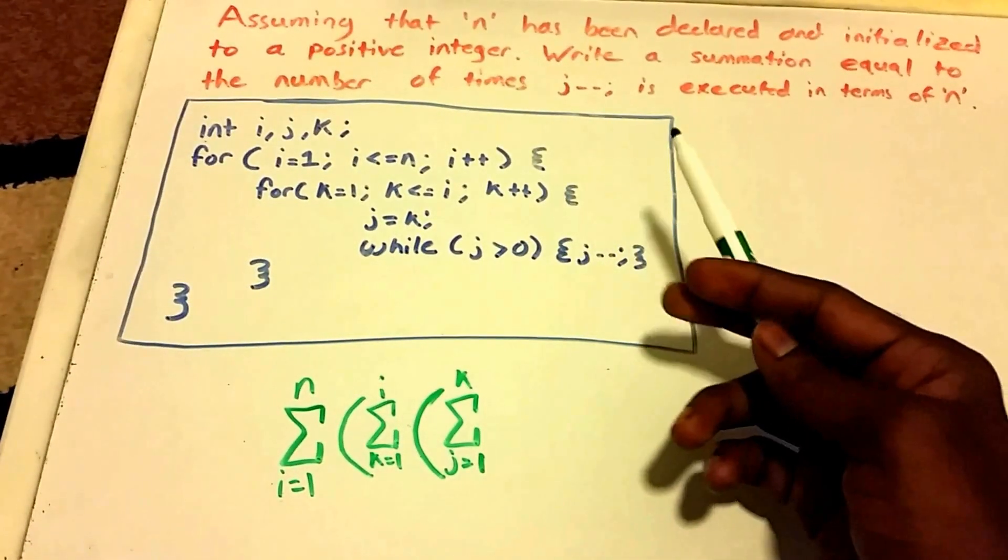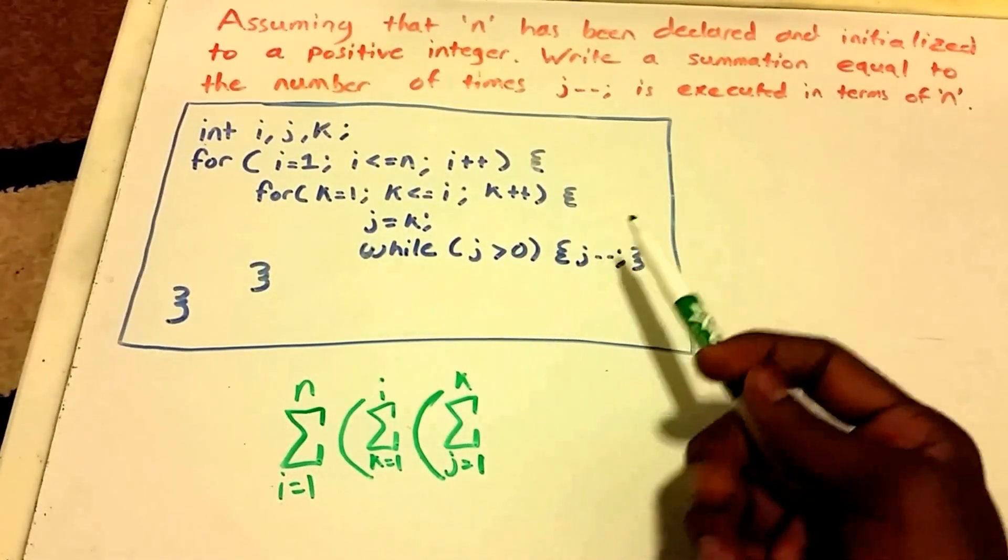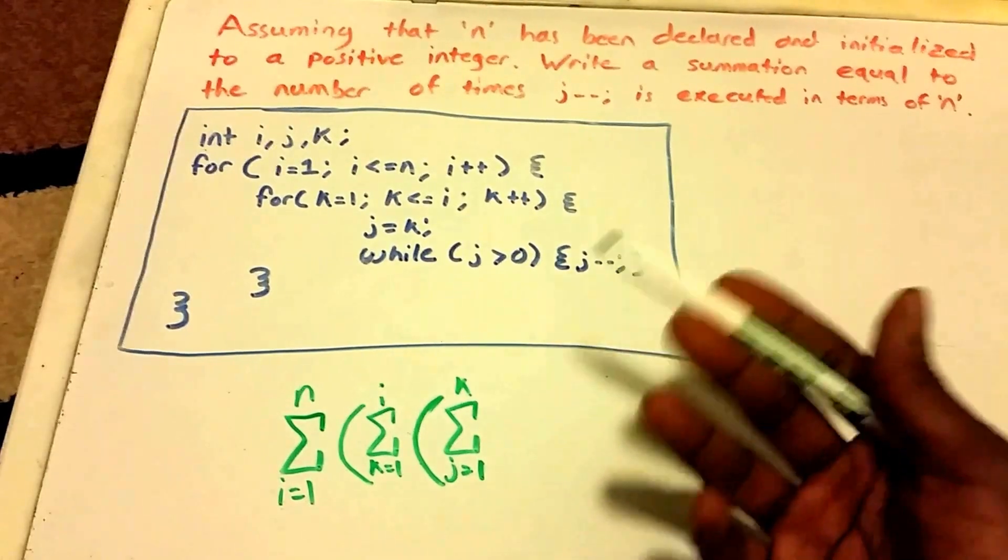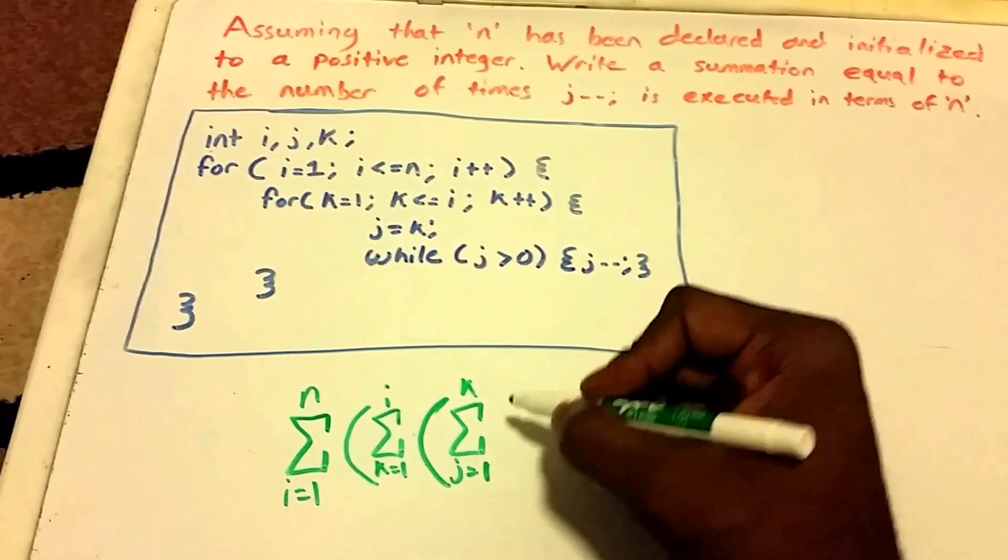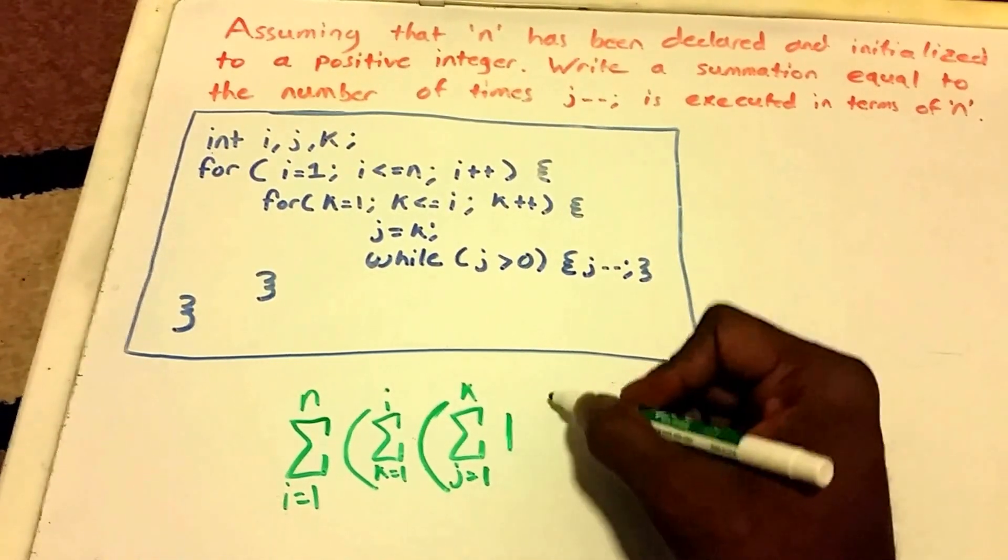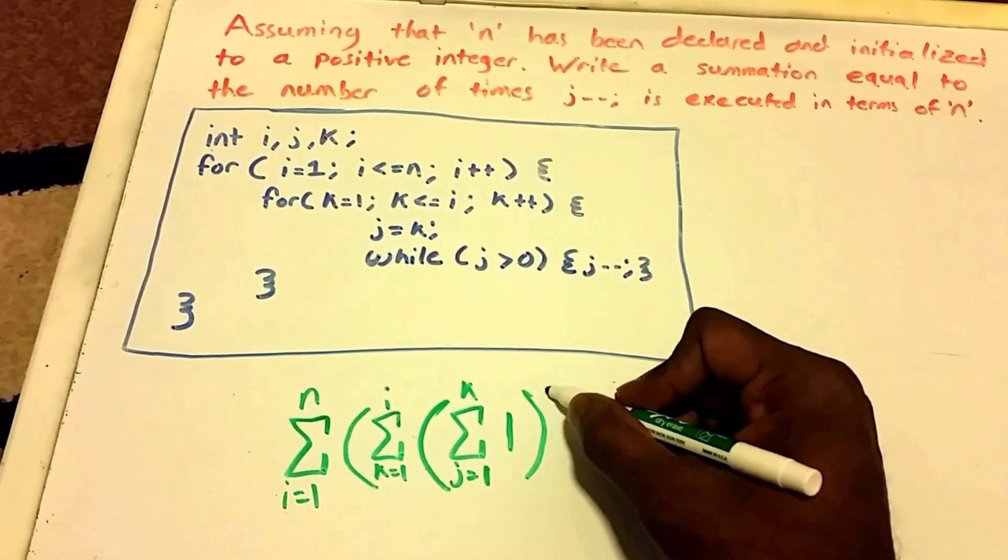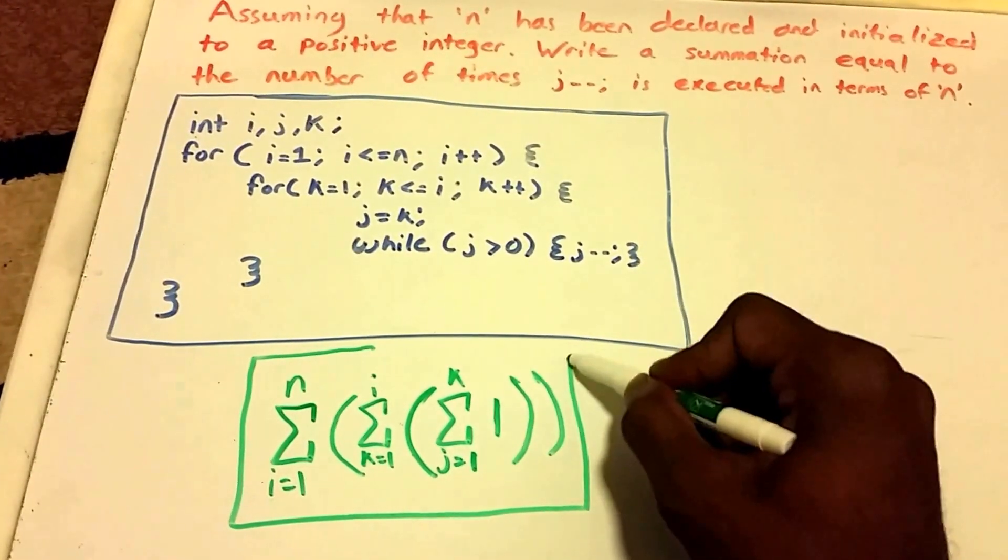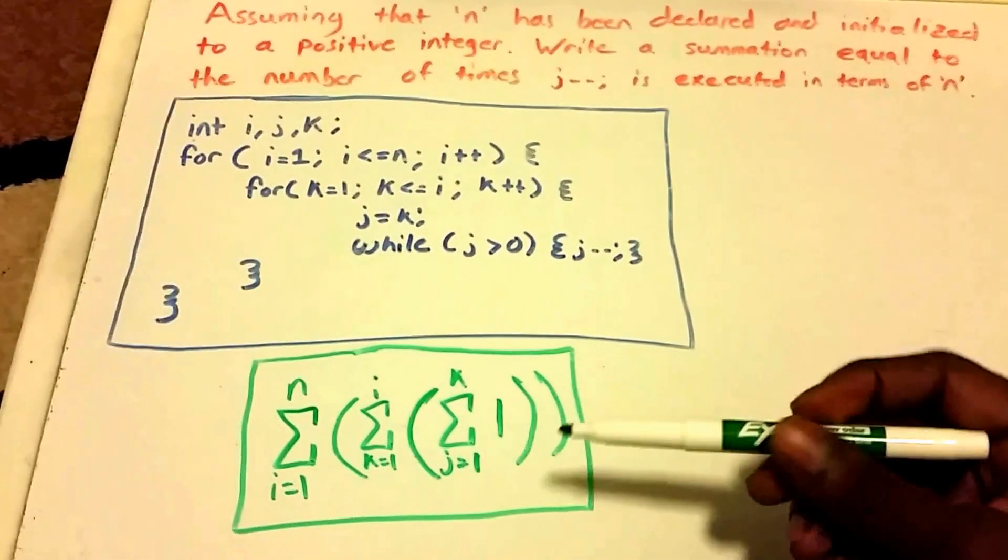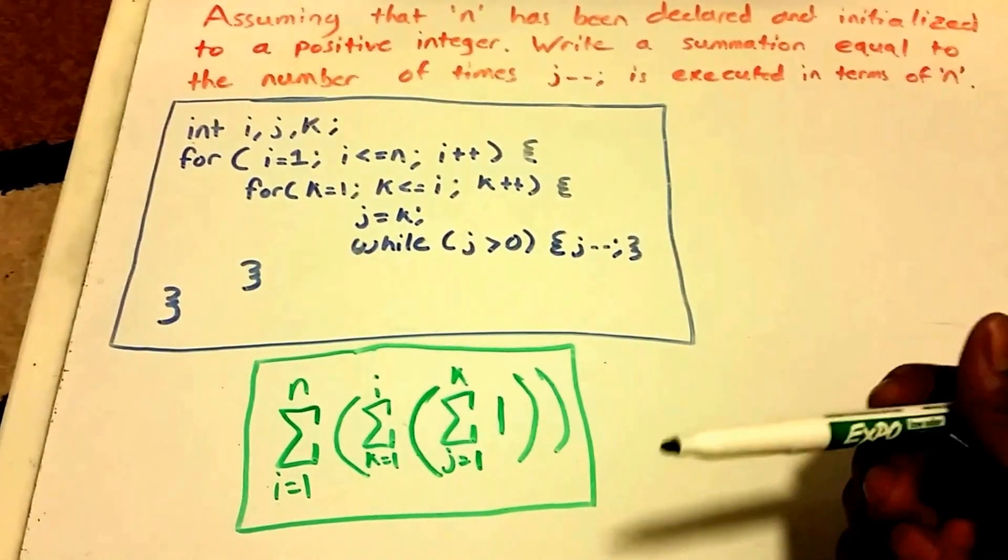And then our j minus minus is a constant, it's executed a constant amount of times, so just put one here, and then we close our parentheses up. And that's the answer for putting this code segment and writing it as a summation.